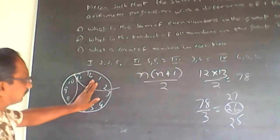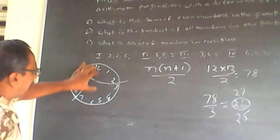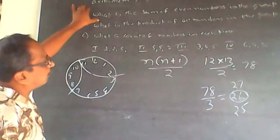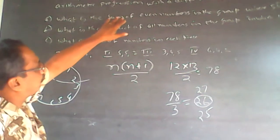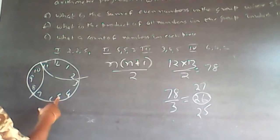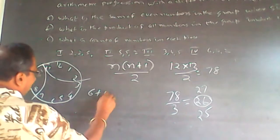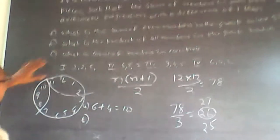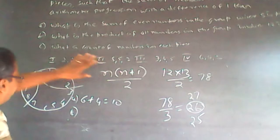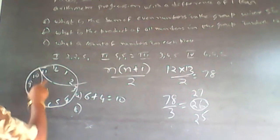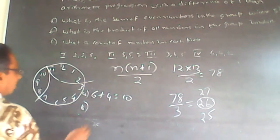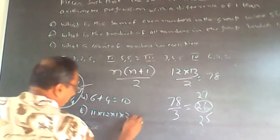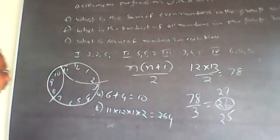Now the answers become easy. For A: 5 is in the piece with sum 25, and the sum of even numbers in that group is 6+4 = 10. For B: 12 is present in the group {11, 12, 1, 2}, and the product of all numbers is 11×12×1×2 = 264.